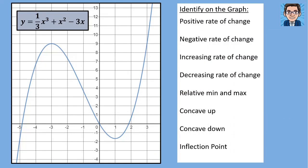Let's take a look at this problem. We've given the equation y equals one-third x cubed plus x squared minus 3x, and we have the graph drawn out as well. We're going to identify on this graph where the rate of change is positive and negative, where it's increasing and decreasing, where the relative mins and maxes are, at what interval it's concave up and concave down, and where the inflection point is.